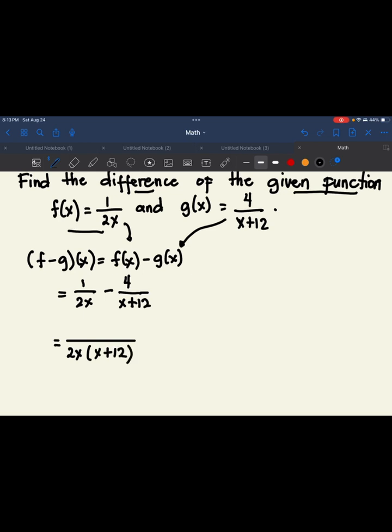So that is our LCD. Next, the denominator is the LCD, divide it by 2x. So the remaining value is we have x plus 12 times 1. So the same answer. Subtract x plus or 2x, the denominator, divide x plus 12. So remaining value is 2x times 4.